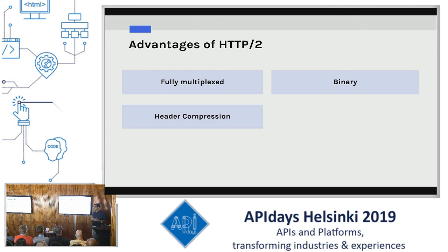HTTP2 combats the header bloat problem using H-Pack instead of DEFLATE, which is normally used by HTTP1 and even SPDY. Importantly, DEFLATE is vulnerable to CRIME attacks, where a hacker can hijack your sessions and get your access details. H-Pack addresses two things: compression of headers and resistance to CRIME attacks. Headers are compressed using static dictionaries, dynamic dictionaries, and Huffman encoding.